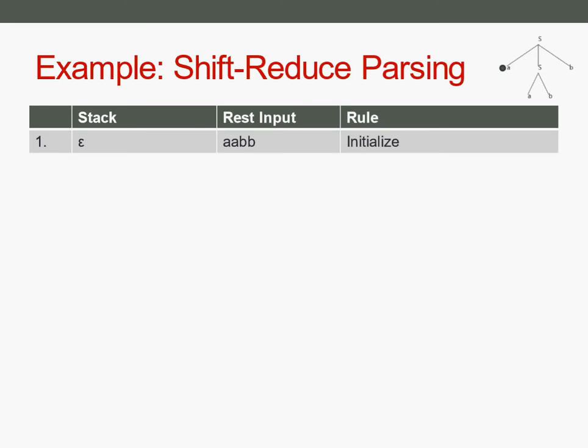Now I shall show you another kind of parsing which is called shift-reduce parsing. It is very similar to top-down parsing but the other way around, and it is named like the two rules it knows, which are shift and reduce. Because it's like top-down but the other way around, we are starting with the empty stack. Here we have the rest input we want to parse, and in this column again we have the rule called initialize because we have to start somehow.